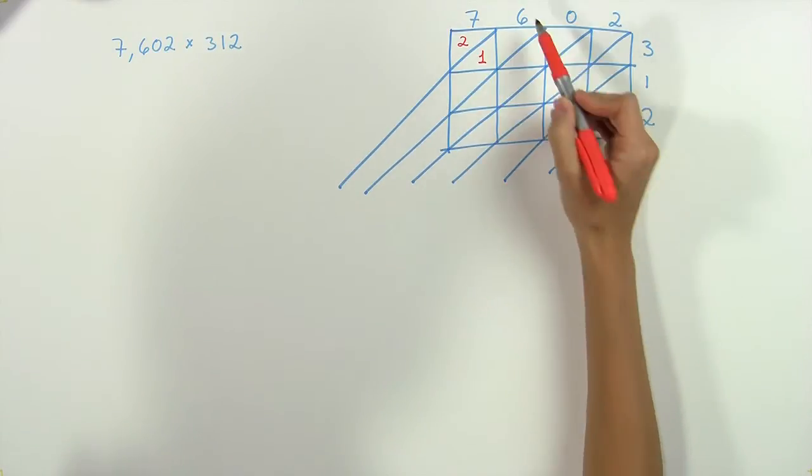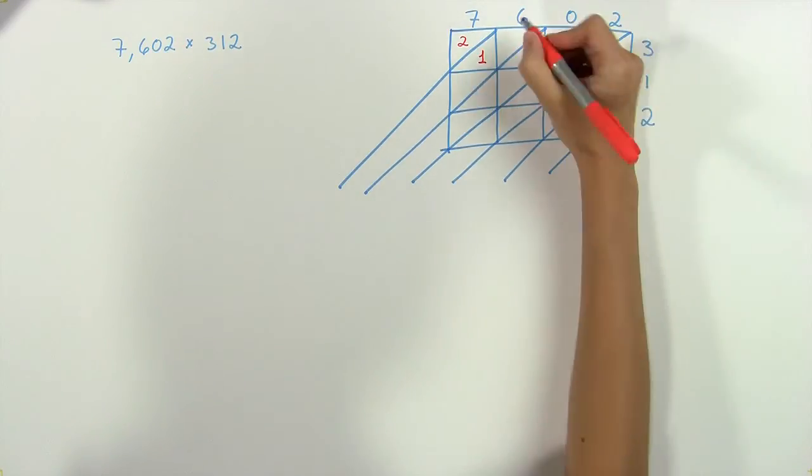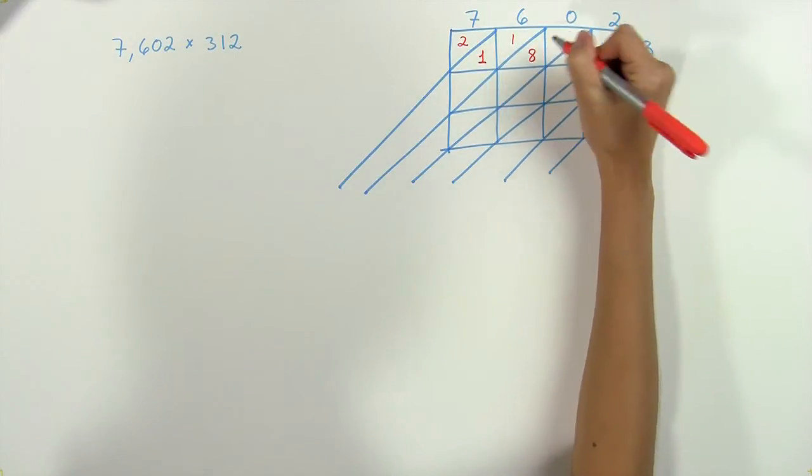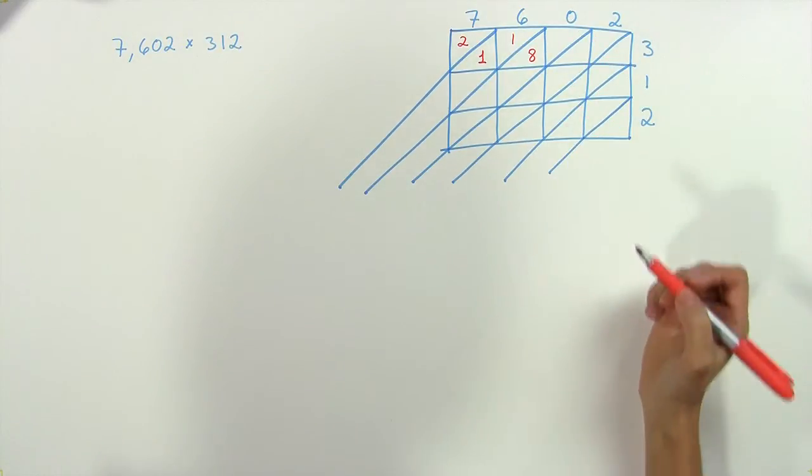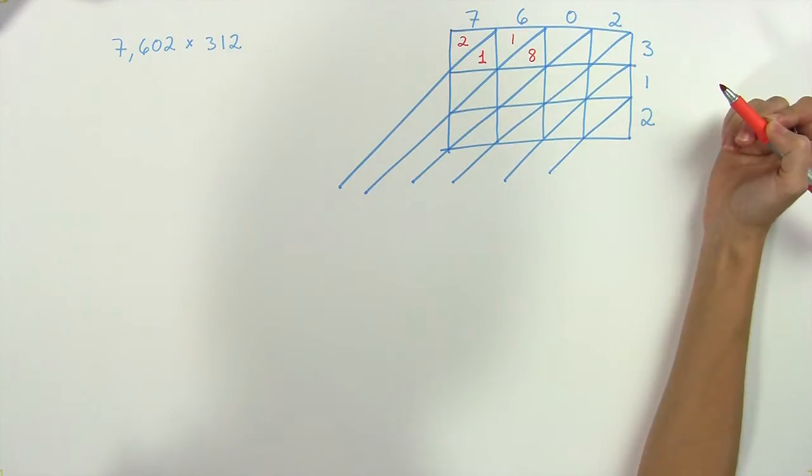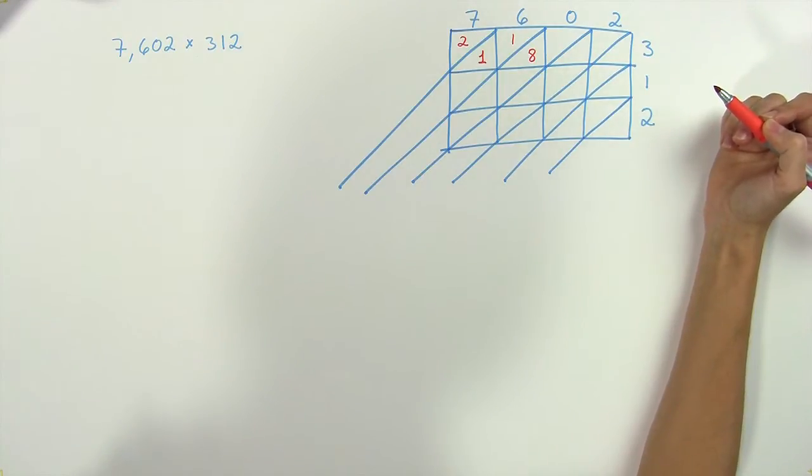Now we continue down the row. Six times three is eighteen, so we have one and then eight. Our next one is zero times three, which is zero. Since zero is only one digit, we go ahead and put it in the lower half.